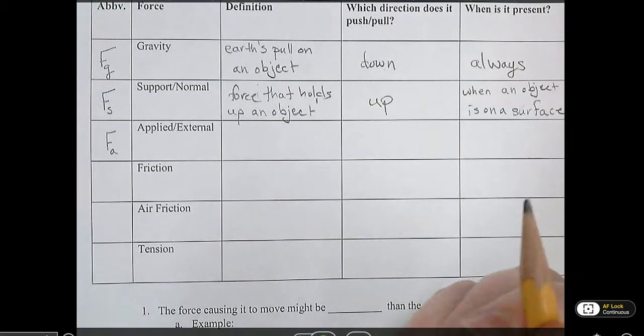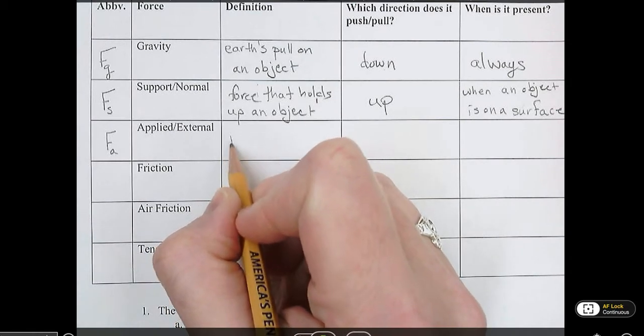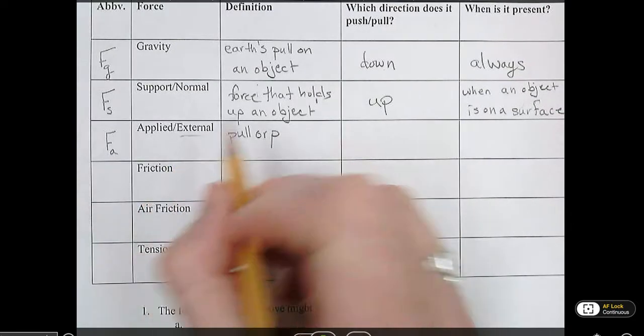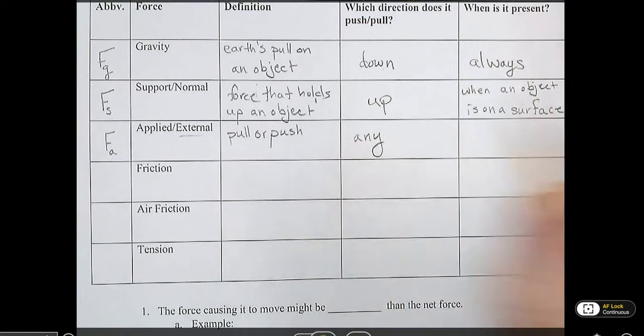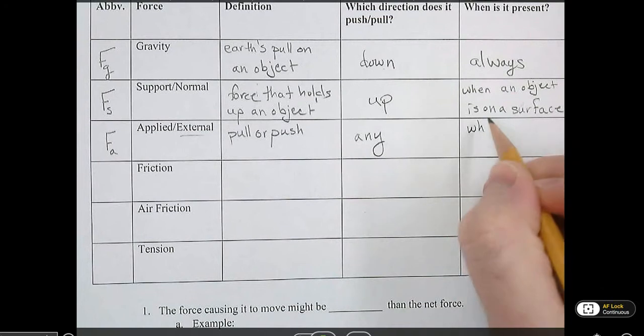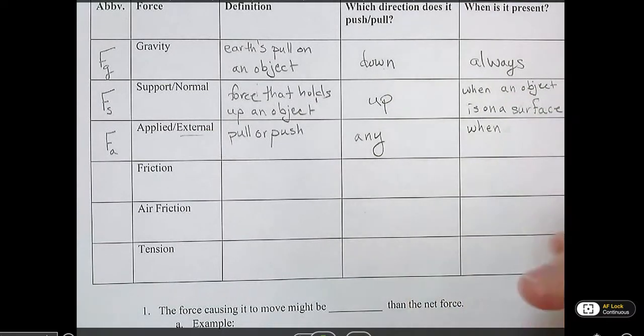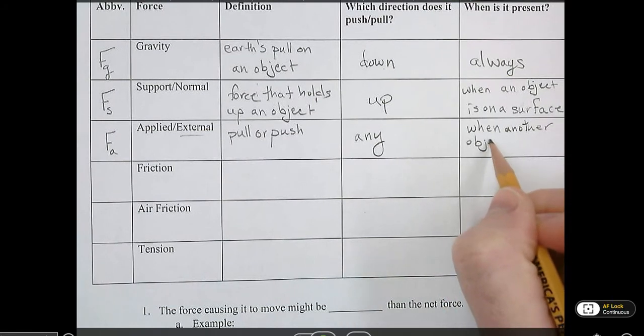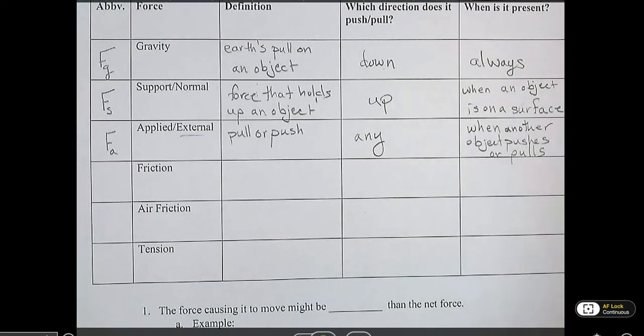The applied force is F little a. Definition is, I'm going to just call it a push or a pull. I understand that these are also pushes and pulls, but this would be something that's external to the object. It can act in any direction. And when is it present? It's present when another object pushes or pulls. Again, that's not a perfect definition, but if a person is pushing or pulling or something like that.